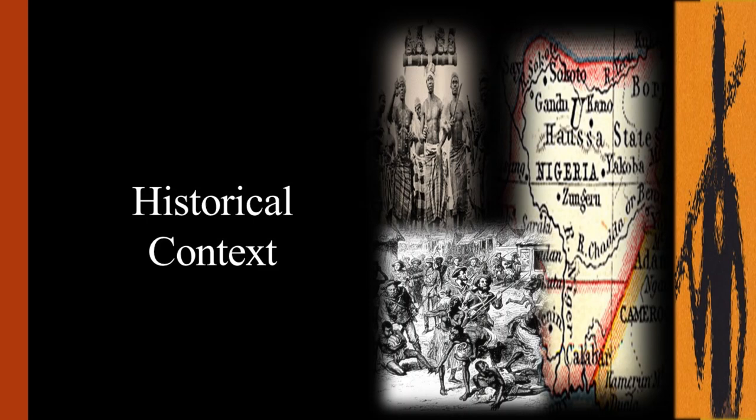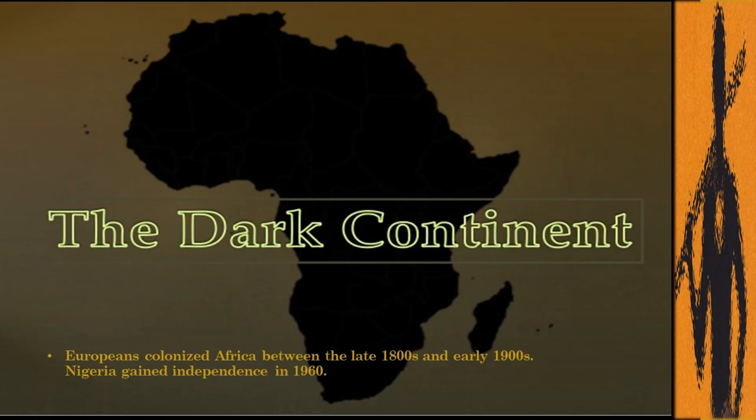We will first look at the historical context of the novel. In order to understand Things Fall Apart, it is important to look at its historical context, as it is strongly linked with the colonization of Africa.